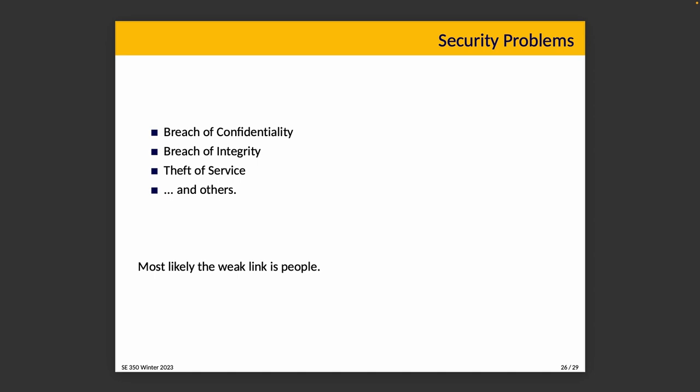The first type is breach of confidentiality. This is what happens when an external actor gains access to information they shouldn't have — like users' personal details: name, address, health records, financial records. Getting this data is lucrative for attackers because it's stuff you can sell on the dark web. And it's terrible for the company because a leak of private information tends to make regulatory authorities very mad, and they will fine you if you don't do the things you're supposed to do to defend against this.